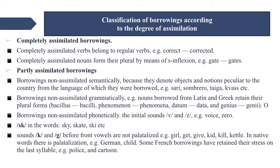Borrowings not assimilated grammatically are those where Latin and Greek words retain their original plural forms. Examples: 'bacillus' / 'bacilli', 'phenomenon' / 'phenomena', 'datum' / 'data', and 'genius' / 'genii'. Non-assimilated phonetically are borrowings with initial sounds v and z — for example, 'voice' and 'zero' — since in native words voiced consonants are used only in the intervocalic position as allophones of sounds f and s, as in 'loss'/'lose' and 'life'/'live'. Some Scandinavian borrowings retain sk- in words like 'sky', 'skate', 'ski', and g sounds before front vowels are not palatalized, as in 'girl', 'get', 'give', 'kid', 'kill', 'kettle'.